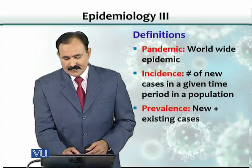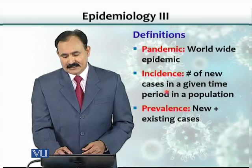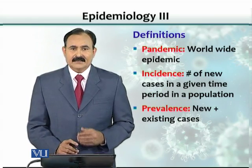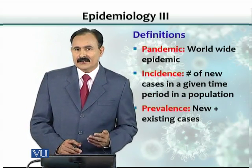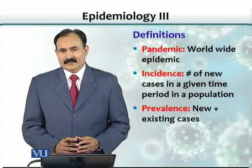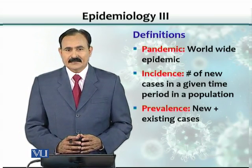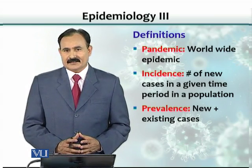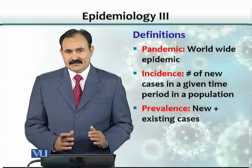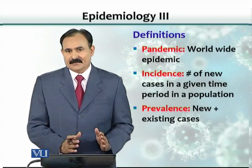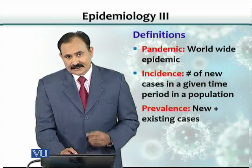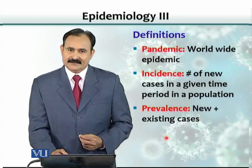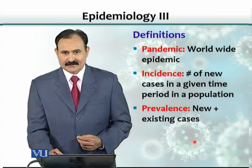Incidence is the number of new cases in a given time period in a population. For example, in a month like August, a disease occurred in a population with a certain percentage — so many people got sick. That is called incidence because it is confined to a specific time period.